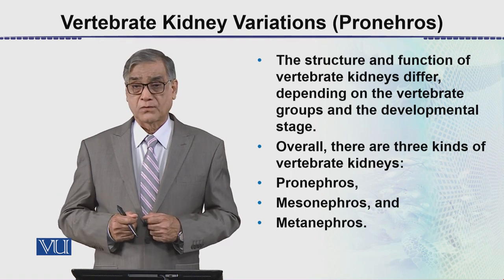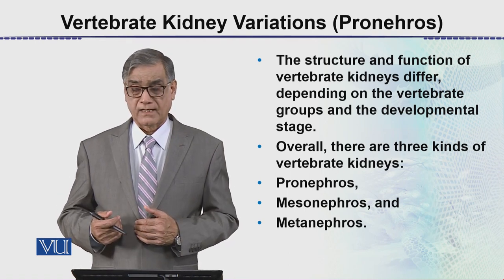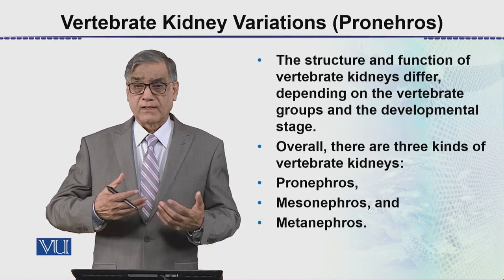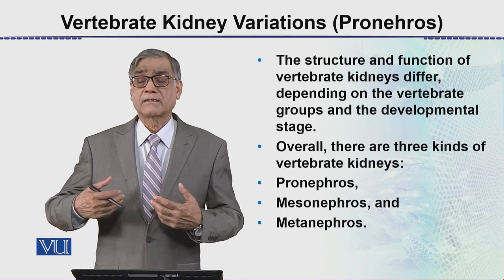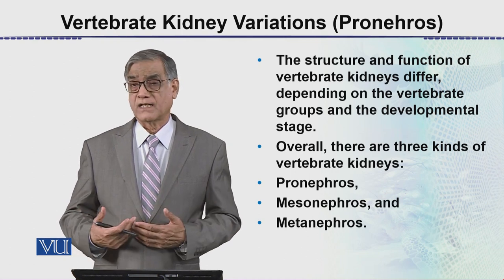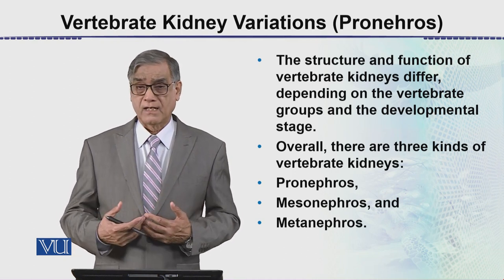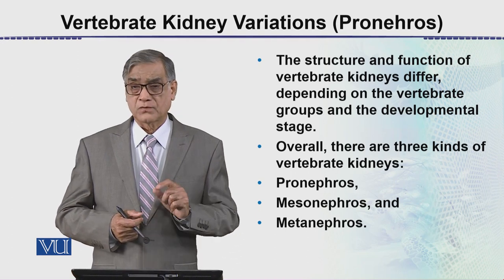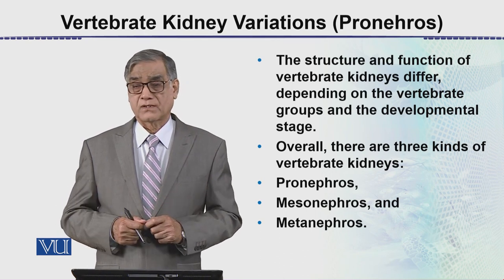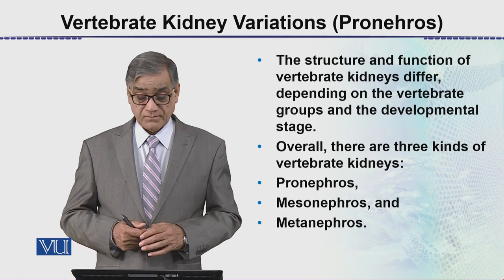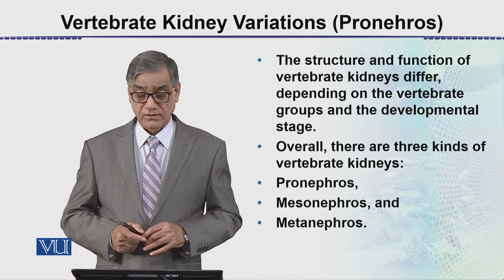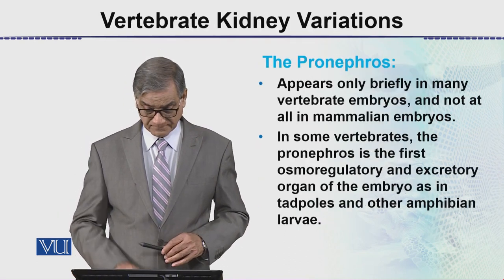In developmental stages, these kidneys develop one after the other. In higher vertebrates — such as reptiles, birds, or mammals — the ultimate form of the kidney is the metanephros, but developmentally it starts from the pro-nephros. After that it is replaced by the mesonephros, and then converted into the metanephros. So overall there are three kinds of vertebrate kidneys: pro-nephros, mesonephros, and metanephros.